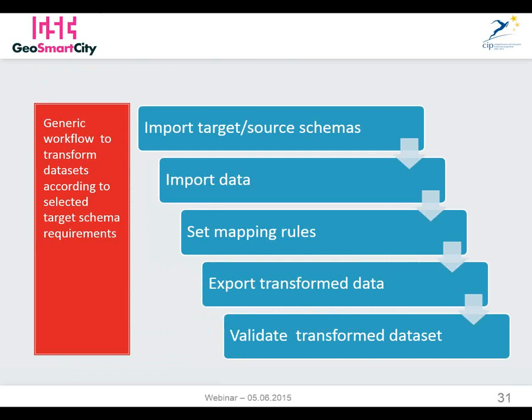This is the generic workflow to transform datasets according to selected target schema requirements — the workflow we used in Hale, but it can be used with any transformation software tool. As a first thing, we have to import the target and source schemas, then import data, set the mapping rules for the transformation, and finally, after having selected all the necessary rules, export the transformed data into GML. Then validate the transformed dataset.